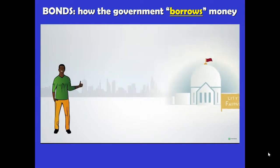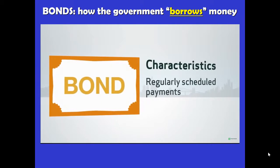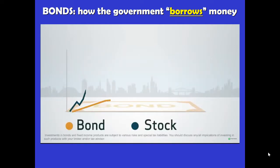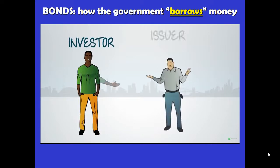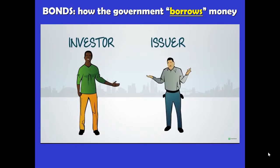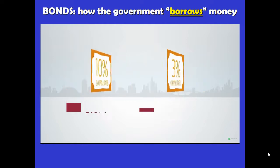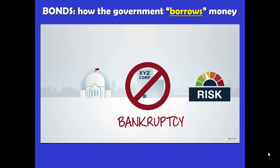This bond was a good deal for both the city and the investor. Fairview got the money to build the stadium; the investor received regular interest payments and return of the original investment. Because bonds offer regularly scheduled payments and return of principal, they're often viewed as a more predictable and stable form of investing. Compare that to stocks, where profits and losses are driven by market forces and are generally less predictable. Of course, like any investment, bonds are not without risk. One key risk is default risk — the possibility that the issuer fails to pay back the principal. Bonds with higher default risk come with higher coupon rates.